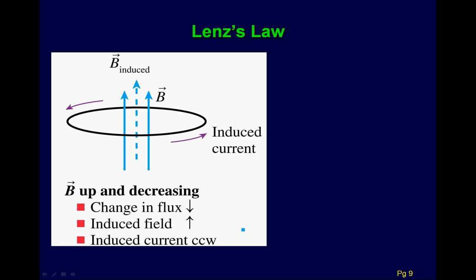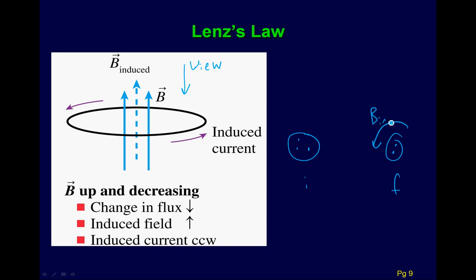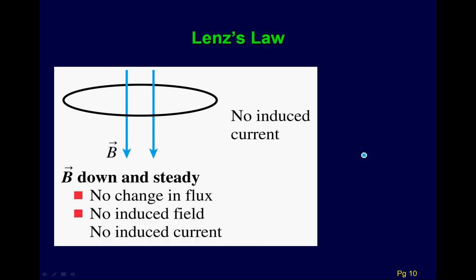The next case: the B field is upward but decreasing. You start with three field lines pointing up, but in the final case there are only two. I want my thumb coming out of the page to induce a B field going upwards, so the induced B field is outward — leading to a counterclockwise current.